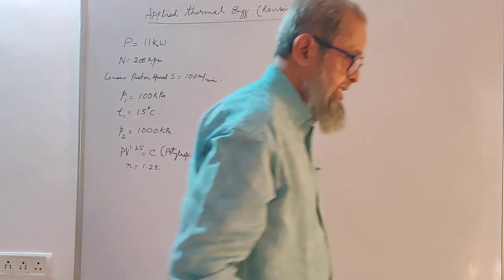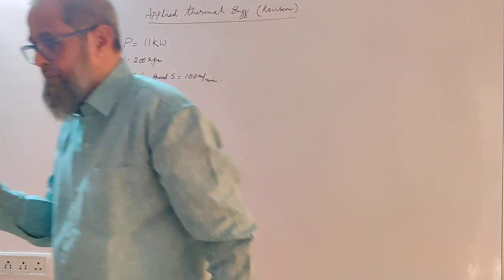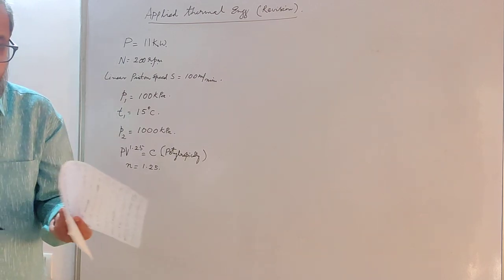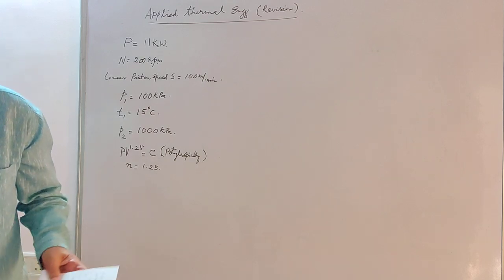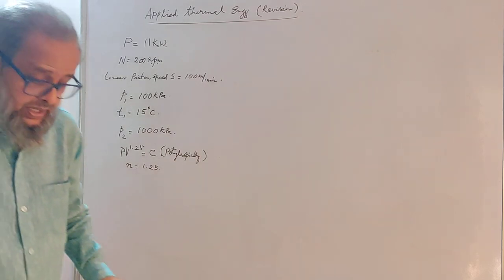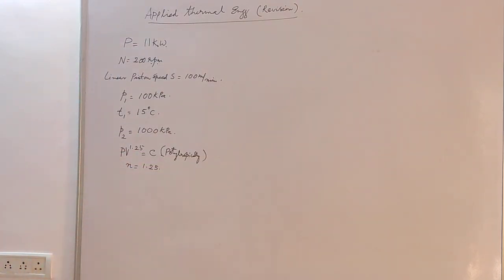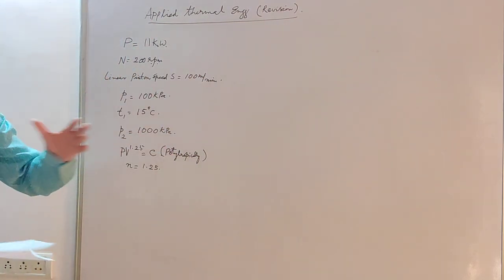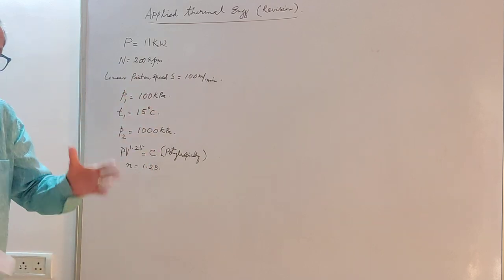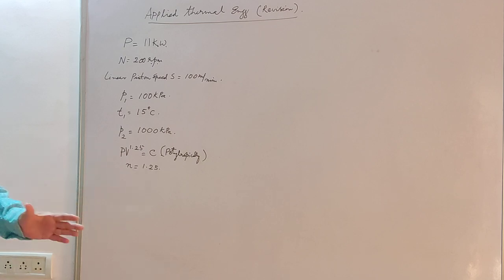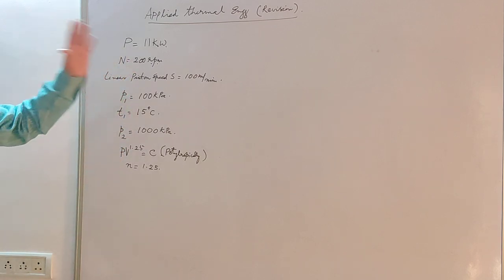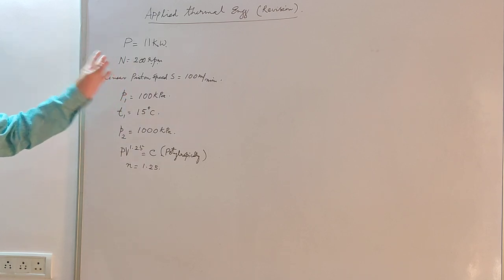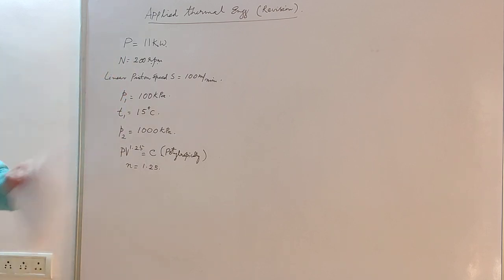An air compressor takes air from the atmosphere, reduces its volume, and increases its pressure. That is the work of an air compressor. We do it because the compressed air has energy stored in it — when it expands, it does work for us. In any pneumatic circuit you are using compressed air and pneumatic devices: spray painting, and many many industrial uses for compressed air. To compress the air we have to give power.